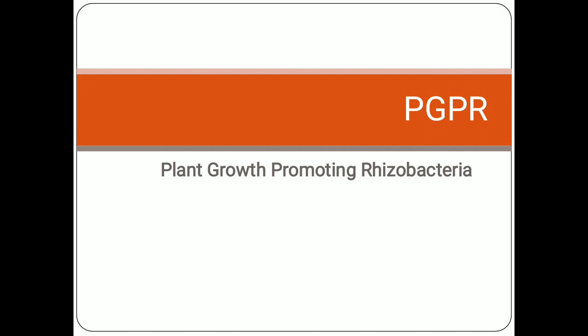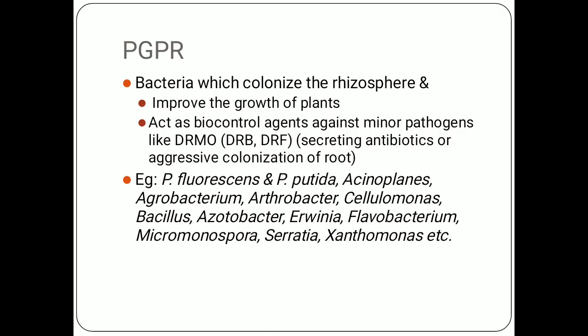PGPRs, that is Plant Growth Promoting Rhizobacteria, are bacteria which colonize the rhizosphere. When they colonize the rhizosphere, they improve the growth of plants directly, or they act as biocontrol agents against pathogens. However, they cannot act as biocontrol agents against major pathogens — they can only act against minor pathogens. These minor pathogens include DRMOs, which stands for Deleterious Rhizosphere Microorganisms.